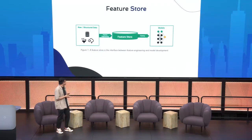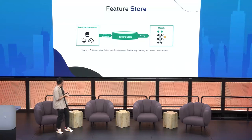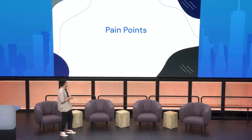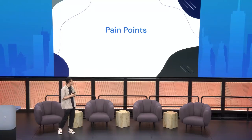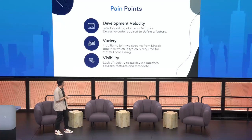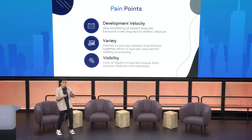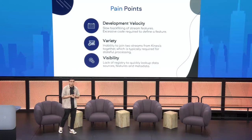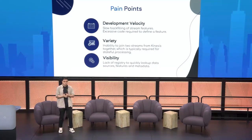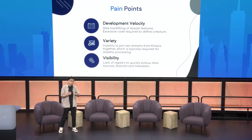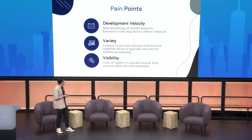A feature system is essentially storage — online storage for serving online features, or offline storage for historical data. The pain points we collected: first, we had an old system using stream data, but in order to onboard a new feature, you had to backfill all the historical data. If I create a new feature today, it only has data starting from now, but I really want data from 2015 or 2017 to understand the full historical situation about a user. So backfilling is really important.